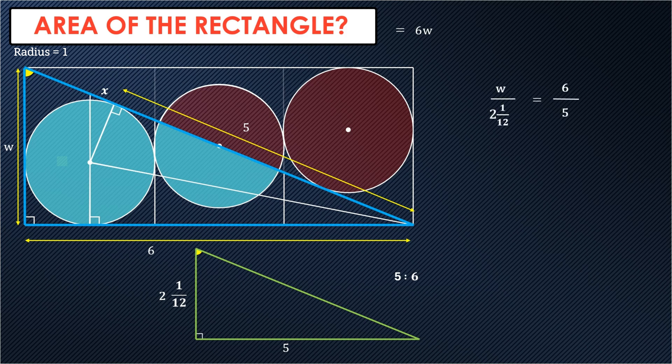And now we're going to solve for W. So multiply both sides by five, then multiply both sides by two and one-twelfth. And we end up with five W equals 12 and a half. All right, divide by five, W equals 2.5. And then just plug that back into our original equation for the area is six times 2.5, which equals 15 square units. Really nice question.